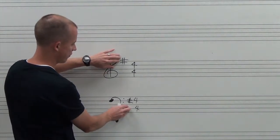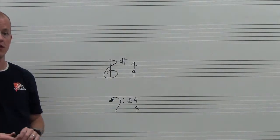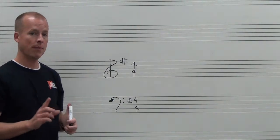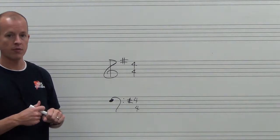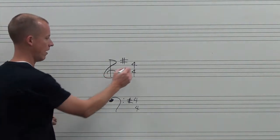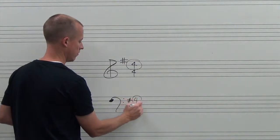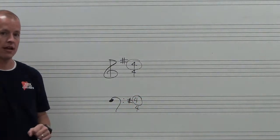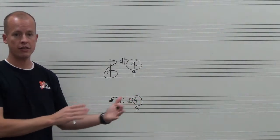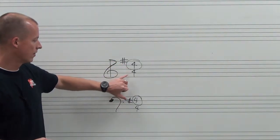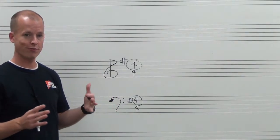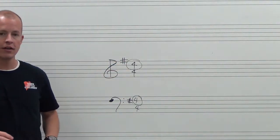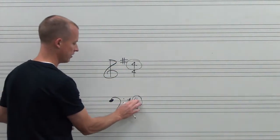That is our key signature. Then we have this set of numbers and this is called the time signature. The main thing that we're going to learn from this is how many beats per measure. And for that we're going to look at the top number. The top number will tell us how many beats will be in each measure of the music.